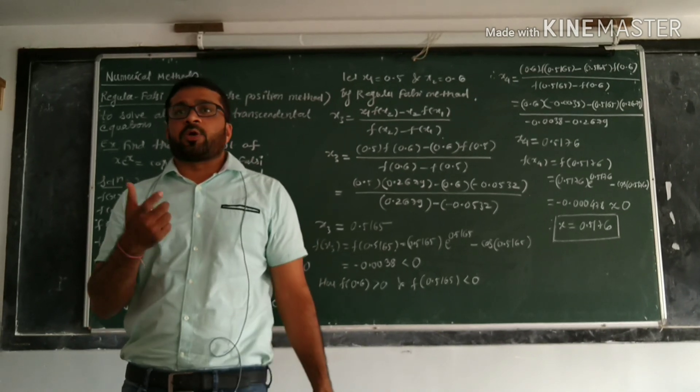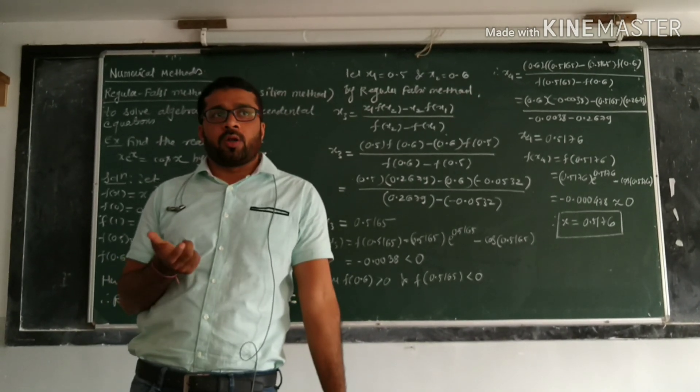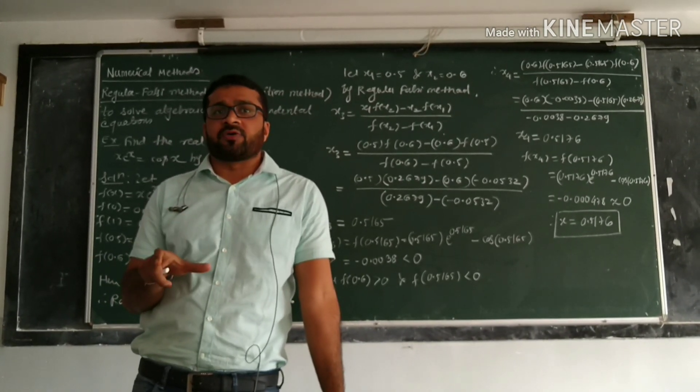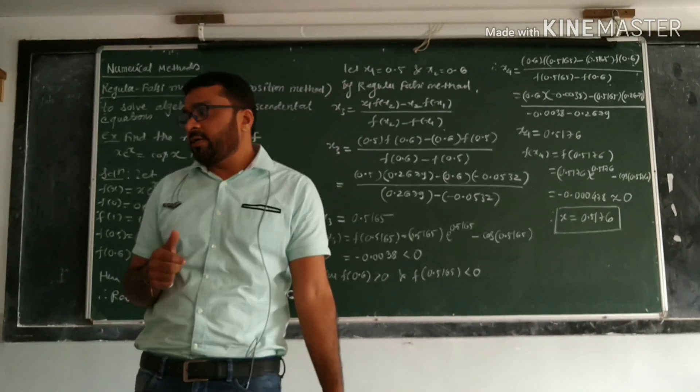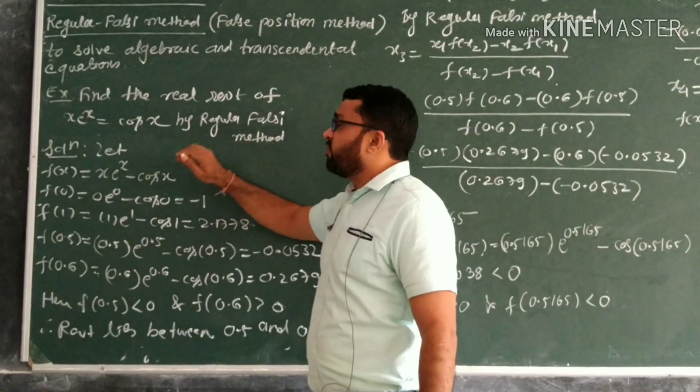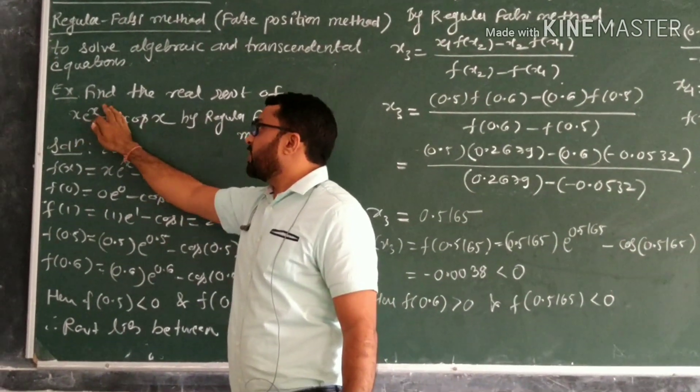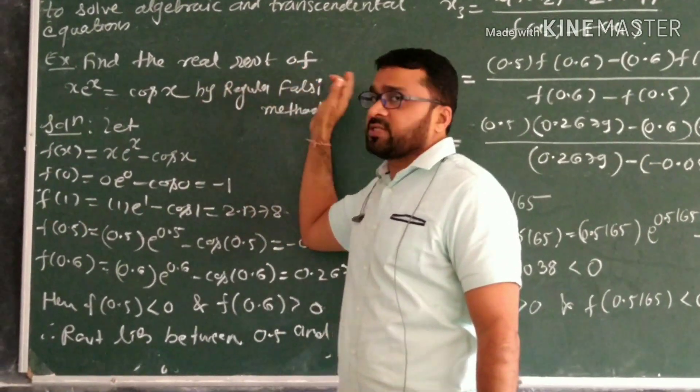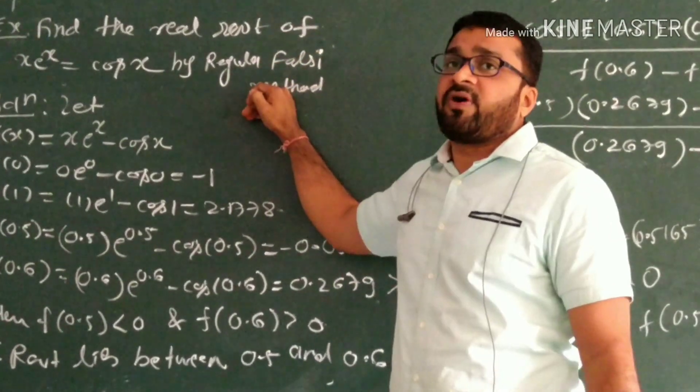Let us see today's example on the Regula-Falsi method, that is how to solve algebraic or transcendental equations by Regula-Falsi method. We have one example here: find the real root of the equation xe^x = cos(x) by the Regula-Falsi method. It is also called the False Position method.